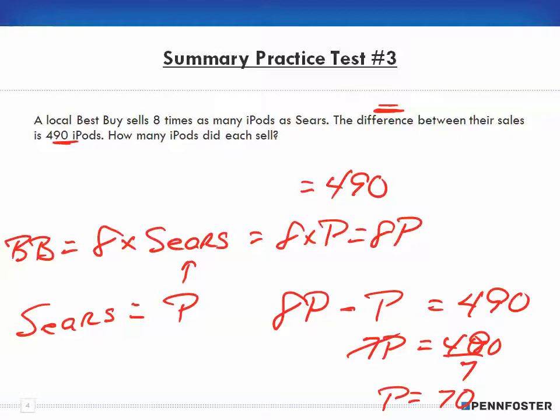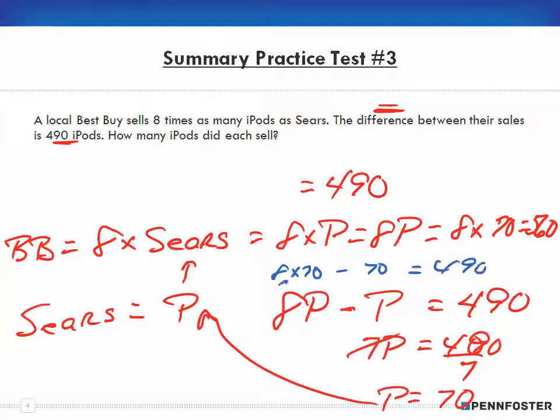Then divide both sides by seven, so P ends up being 70 iPads. That means Sears sells 70 iPads, and for Best Buy it's eight times the P, which is 70, which ends up being 560. And in order to make sure that our P is correct as our check, we plug the values back in. We get eight times 70 minus 70 is equal to 490. So eight times 70 is 560 minus 70 equals 490, and so 490 is equal to 490.